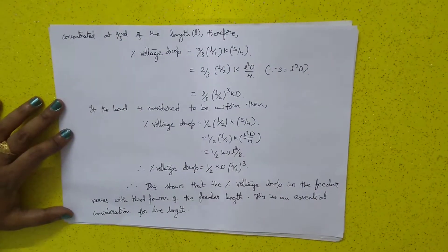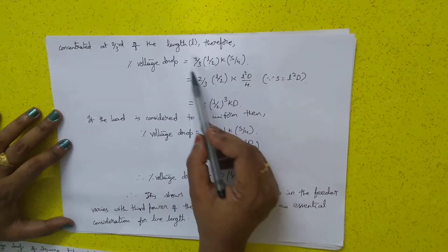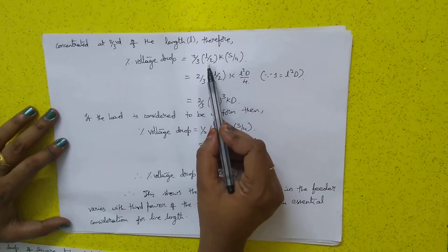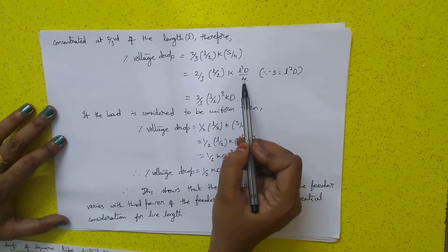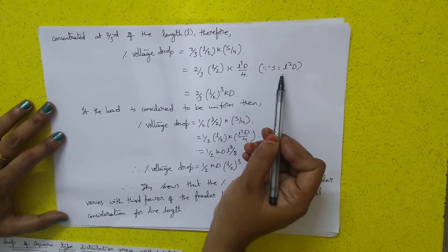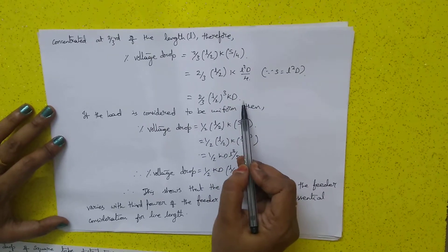The load is concentrated at two-thirds of the length L. Therefore, percentage voltage drop equals two-thirds of L by 2, k, s by 4, which equals two-thirds L by 2, k, L-square d by 4, since s equals L-square d. Finally, two-thirds of L by 2 whole cube, k into d.